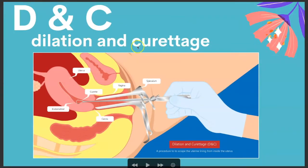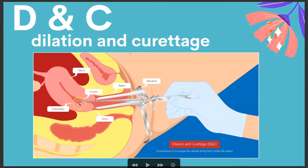DNC is dilation and curettage. Doctors will do a DNC if there's abnormal uterine bleeding in order to take a sample of the tissue and figure out what's going on. Or for example, if a woman has had a miscarriage and there are still portions of the fetus left, they may have to go in there and do this.